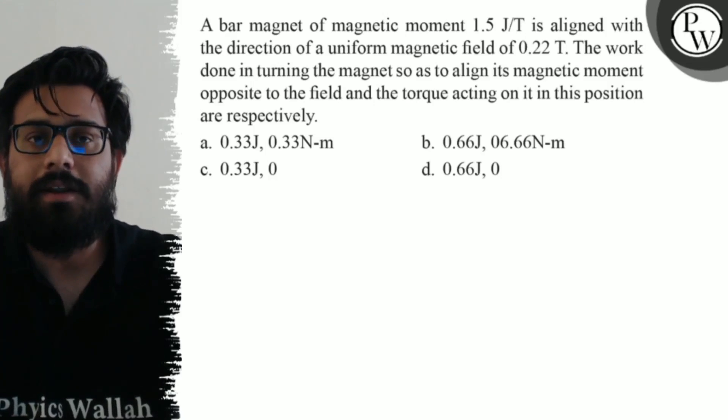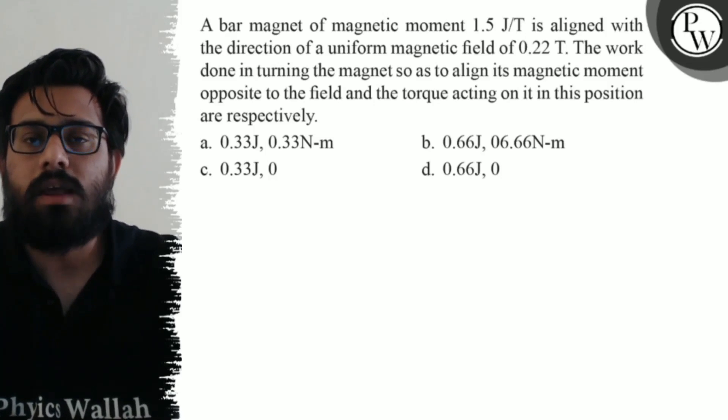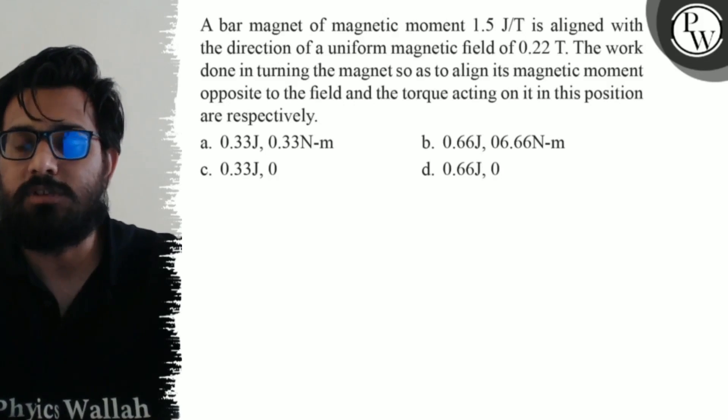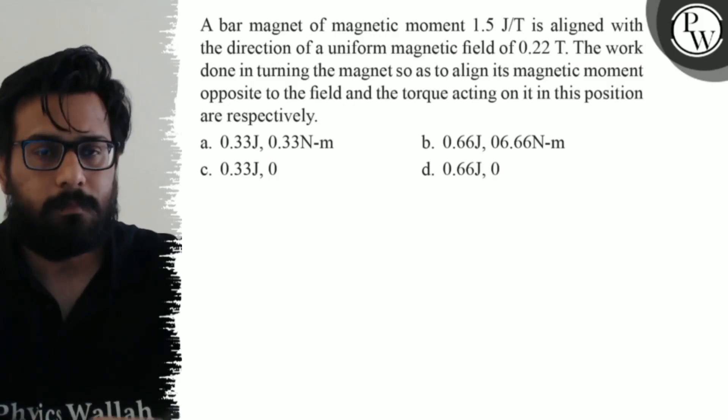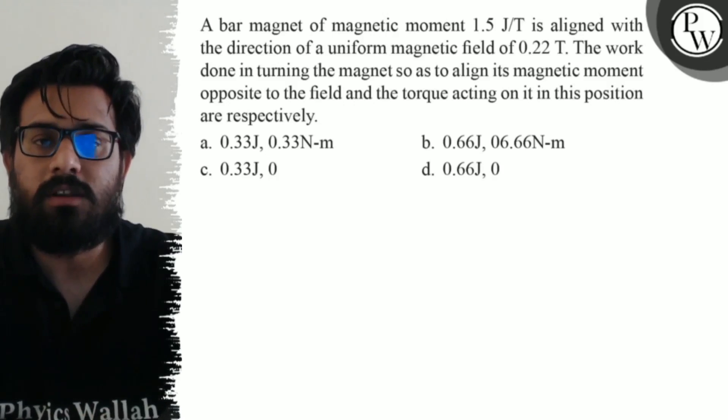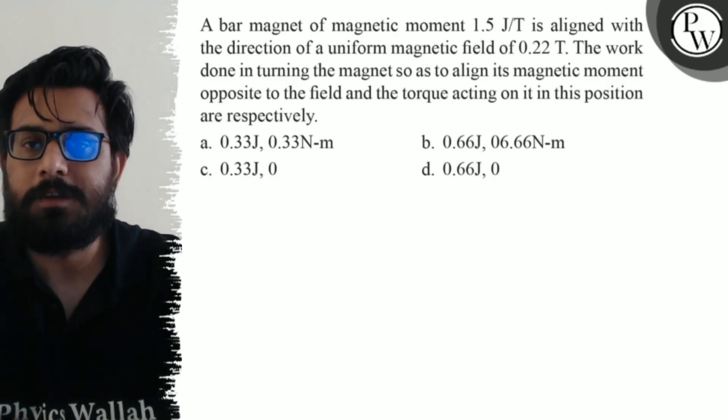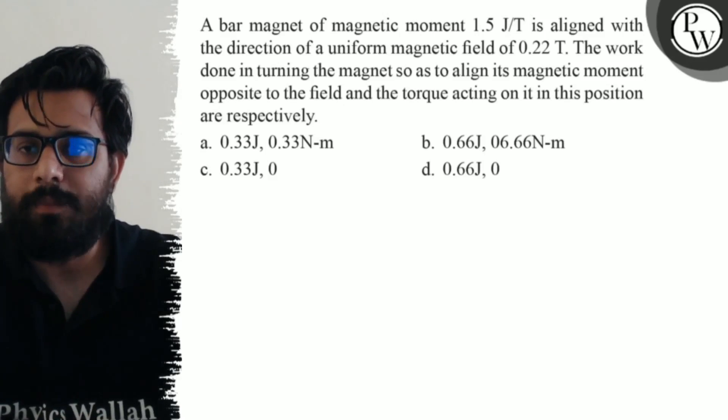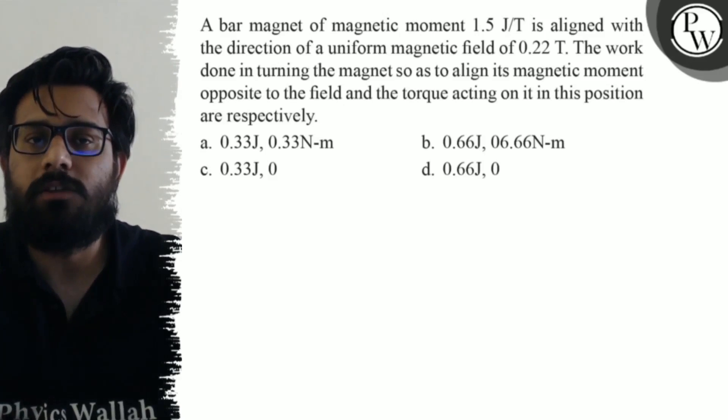The work done in turning the magnet so as to align its magnetic moment opposite to the field and the torque acting on it in this position are respectively. Your first option says 0.33 Joule and 0.33 Nm, second option says 0.66 Joule and 6.66 Nm, third option says 0.33 Joule and 0, fourth option says 0.66 Joule and 0.